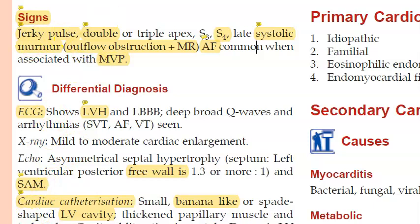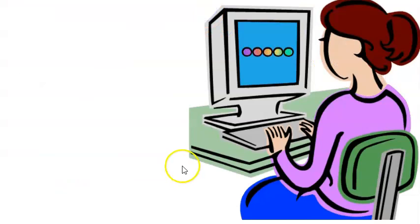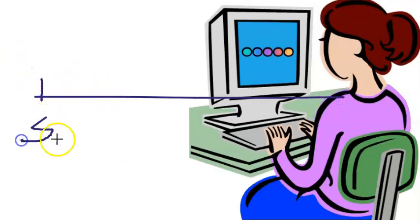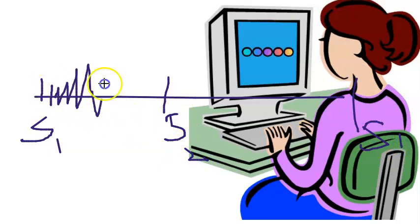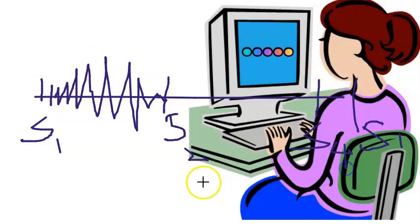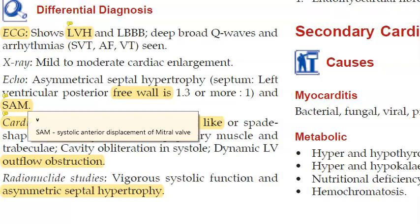Signs include a jerky pulse, double or triple apex beat, late systolic murmur, mitral regurgitation, mitral valve prolapse, and atrial fibrillation. An S4 can be heard because the atria contract forcefully to push blood into the left ventricle. The S2 can be narrow, single, or show a paradoxical split.